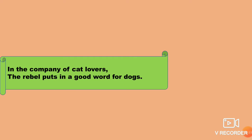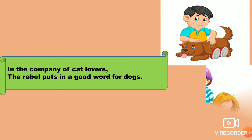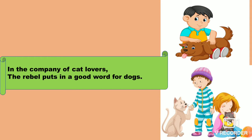In the company of cat lovers, the rebel puts in a good word for dogs. When everybody says that cats are good and praises cats, the rebel says that dogs are very good. So as you see, the rebel always acts in the opposite manner. He doesn't agree with others — he always disagrees and does things the opposite way.